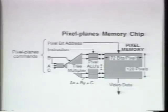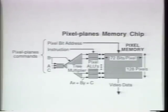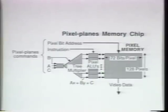Many pixel calculations turn out to be linear in screen space. Calculations of this form are very efficient in the system, since only the linear coefficients a, b, and c and their operation codes need to be broadcast to the memory chips. Each chip has a multiplier tree to calculate the expression ax plus by plus c, and so only simple bit operations need to be done at the individual pixel level.